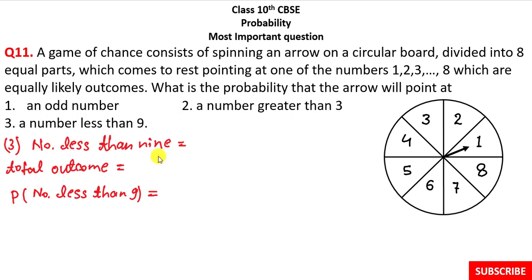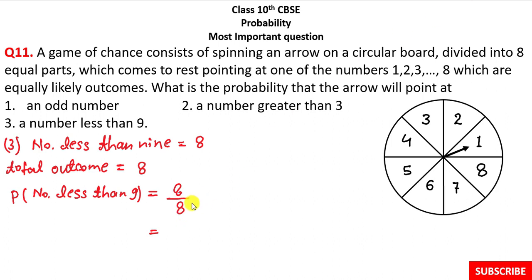The third part: find the probability of a number less than 9. All numbers on the board from 1 to 8 are less than 9, so the favorable outcomes equal 8. The total outcomes are also 8. Therefore, the probability of a number less than 9 equals 8 upon 8, which simplifies to 1. This is the correct answer to the third part of the question.